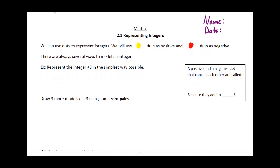If we need to represent the integer +3 in the simplest way possible, well, the simplest way to do that would be to have 3 yellow dots. If each one of those is like a little +1, then they would all add up to make a +3.